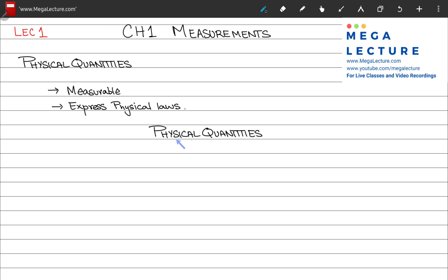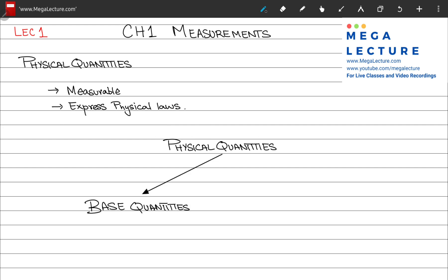Physical quantities are measurable quantities and the laws of physics can be expressed in terms of them. These physical quantities can be divided into two groups. The first is base quantities — these cannot be expressed in terms of any other quantities. Then we have derived quantities, which are ones that can be expressed in terms of other quantities, such as the base quantities.